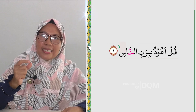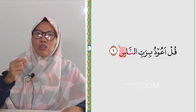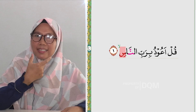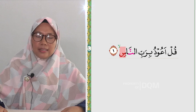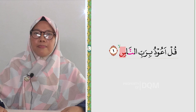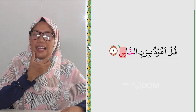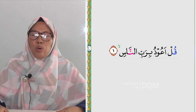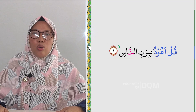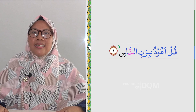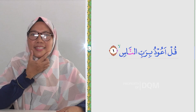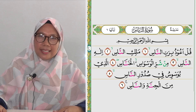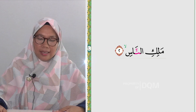Begitu pula huruf Sin di ujung. Sin adalah huruf tipis, cara membacanya identik dengan tersenyum — kelisan harus tersenyum: 'birabbin nas'. Saya ulangi: 'Qul a'udhu birabbin nas'. Ayat kedua: 'Malikin nas' — sama dengan ayat pertama.